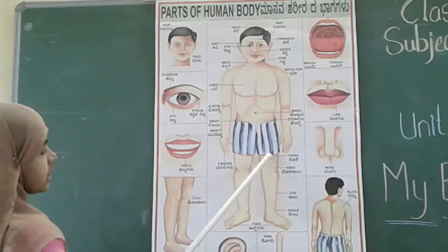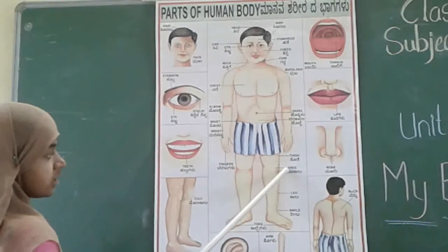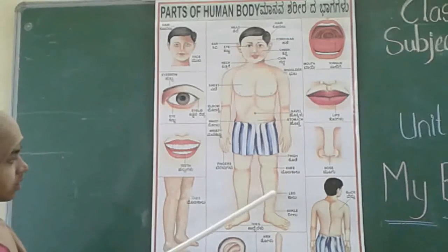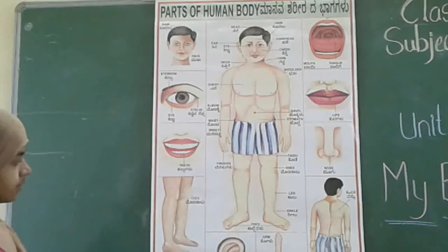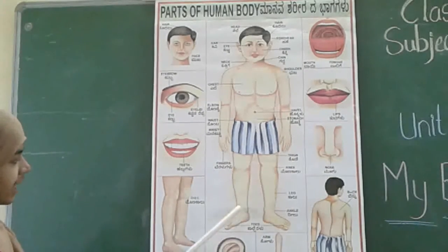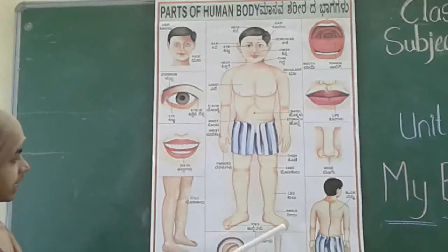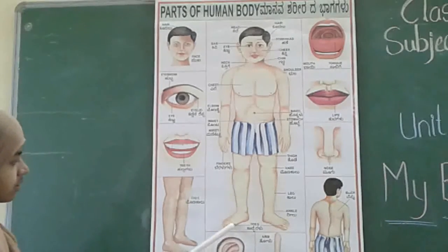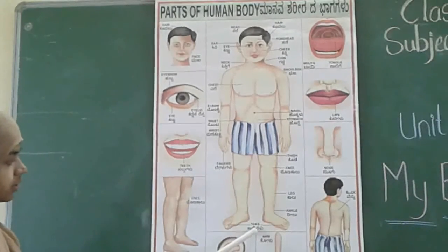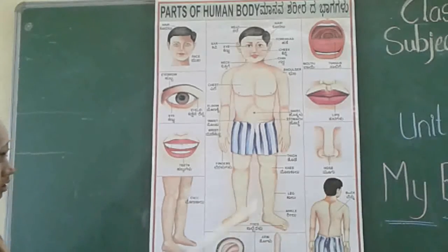This is the thigh. And this is called the knee. This part is called the leg. And these are the ankle. And these are called toes.